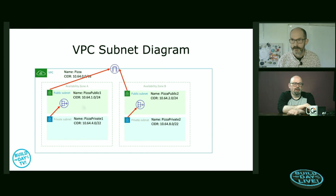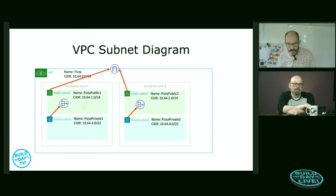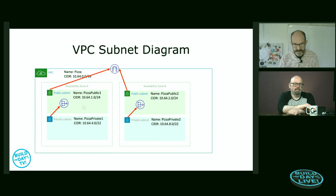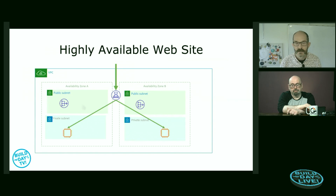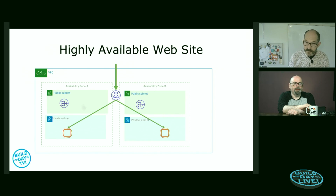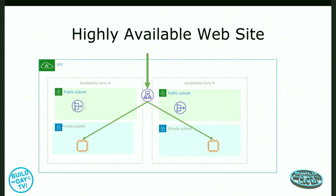One last quick question: is there a priority of which subnet traffic would go from, or can you choose? At this point we haven't controlled how traffic and connections come in — that would be done as we hit our next step, which is to build a highly available website. The load balancer at the front is our entry point, and that's what controls it all.